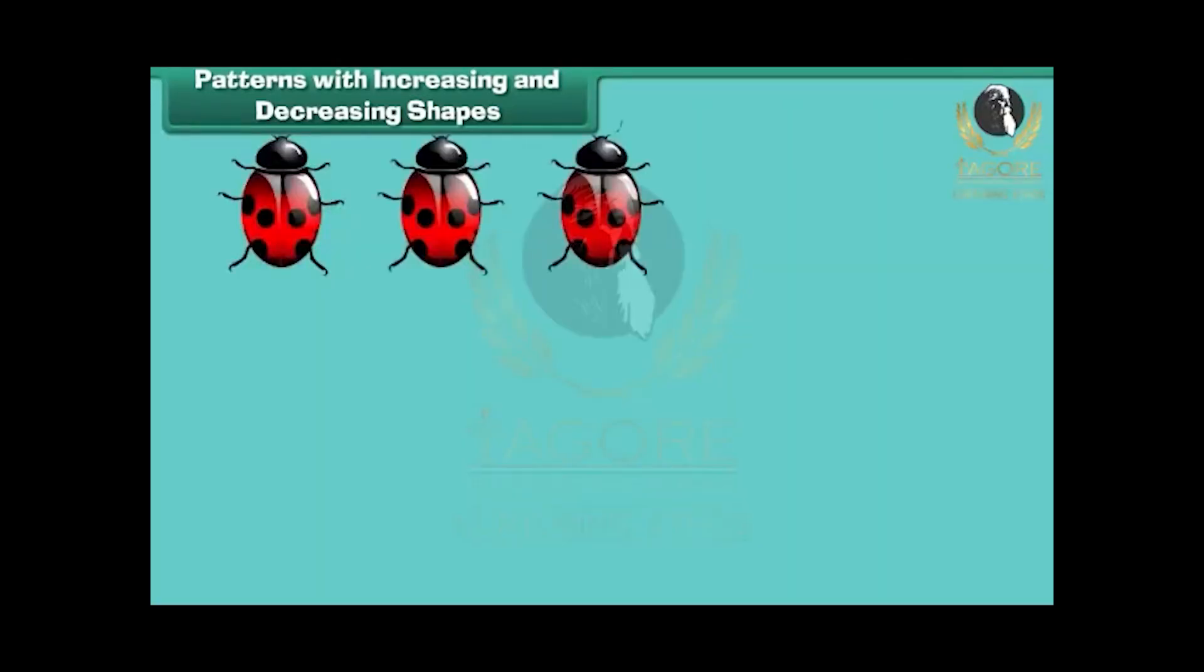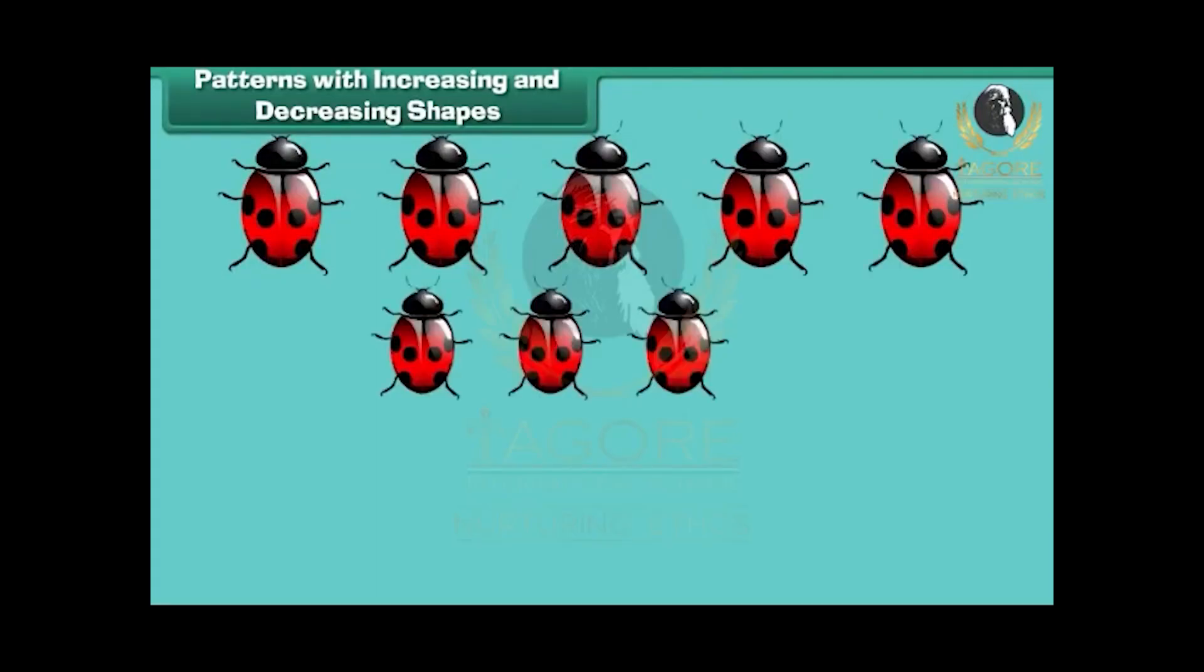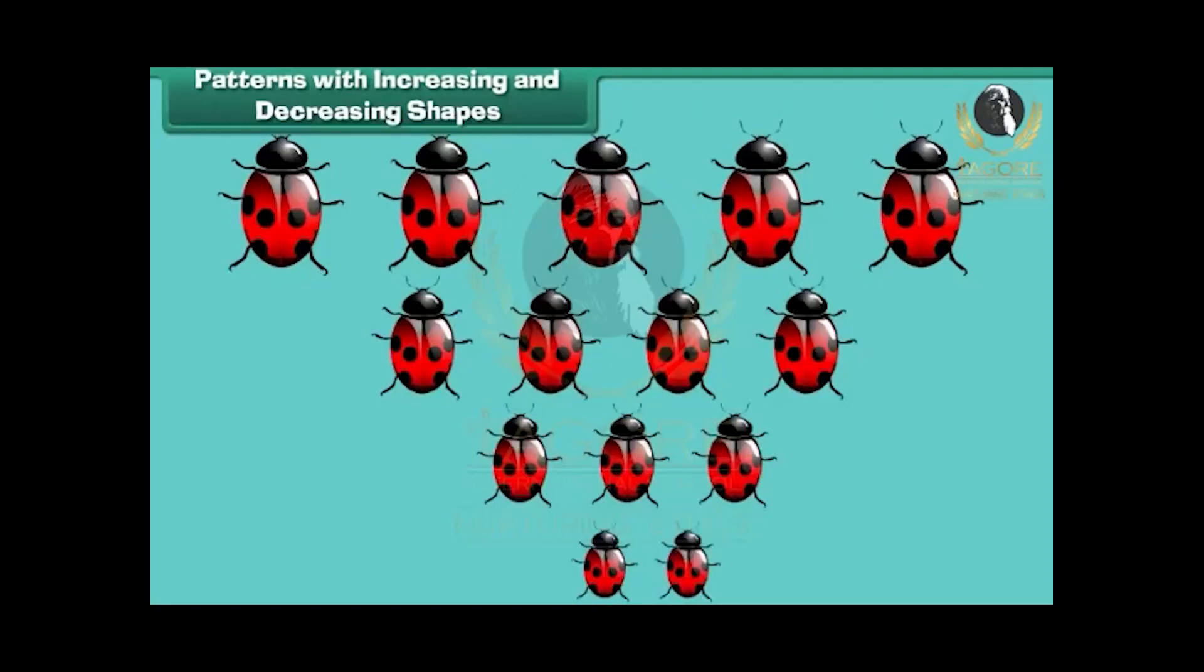Look at one more arrangement of shapes. Five large beetles followed by four smaller beetles followed by three even smaller beetles and so on. This is also a pattern because the number and size of the beetles decreases in a definite order.